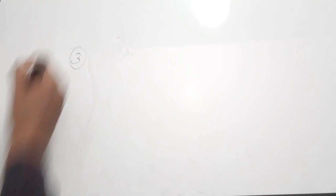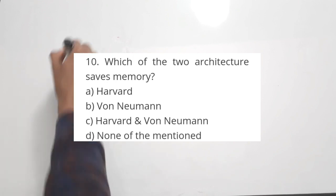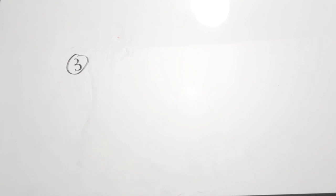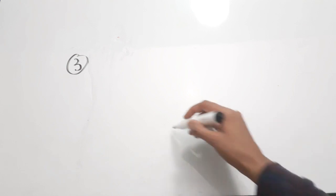The third question is from 8051, a very important subject for technical assistant exams. Between Von Neumann architecture and Harvard architecture, which saves memory? In Von Neumann architecture, instruction memory and data memory are combined into a single storage area, saving memory. In Harvard architecture, instruction and data are stored in two separate memories, requiring more memory. The correct answer is option B — Von Neumann architecture.